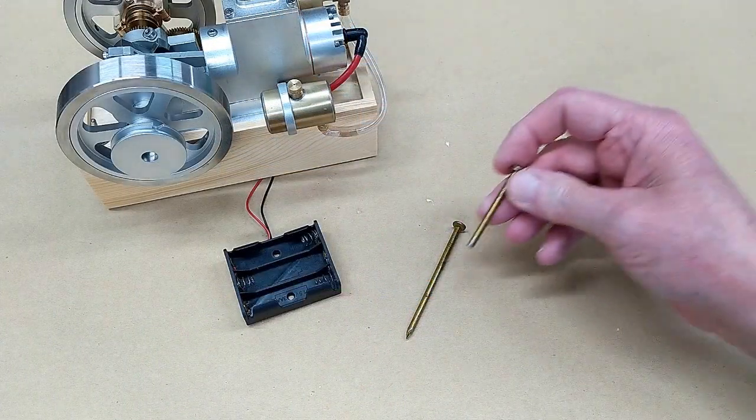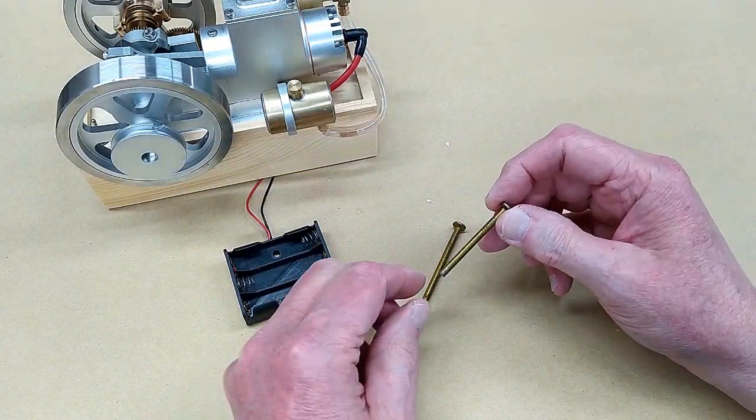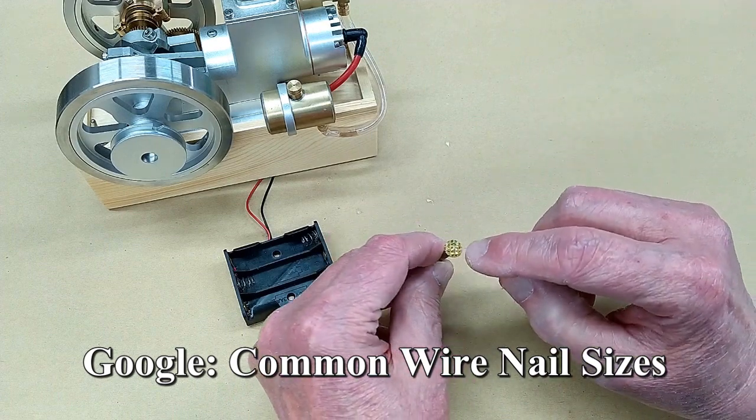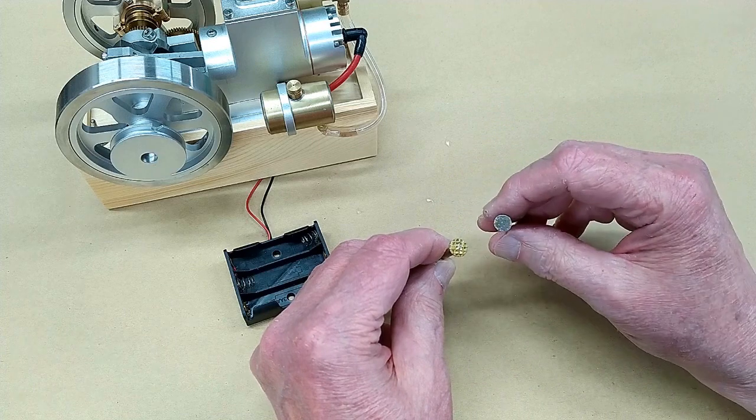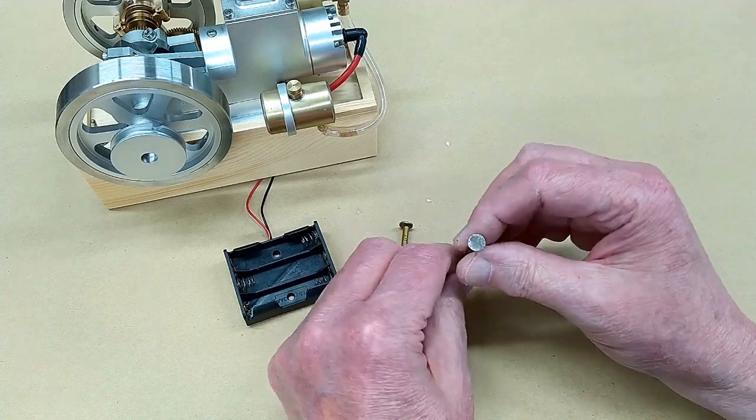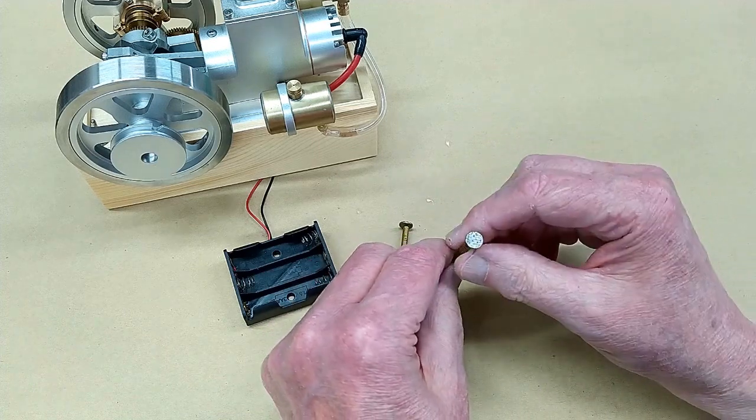I take a 9-penny nail, I cut it off, and this head is textured so the hammer head doesn't slip off the nail, supposedly. First thing I do is I grind that flat and get rid of that texture.